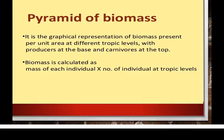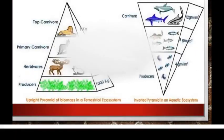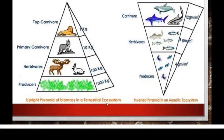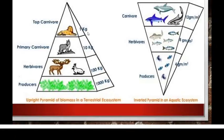Mostly the pyramid of biomass will be in the upright position, but in some aquatic food chains it may be inverted. Here is the upright pyramid of biomass in a terrestrial ecosystem and here is the inverted pyramid in an aquatic ecosystem. In the terrestrial example, values are given as 1000 kg, 100 kg, 10 kg, and 1 kg dry weight. In the aquatic example, values are 4 g/m², 8 g/m², and 12 g/m².